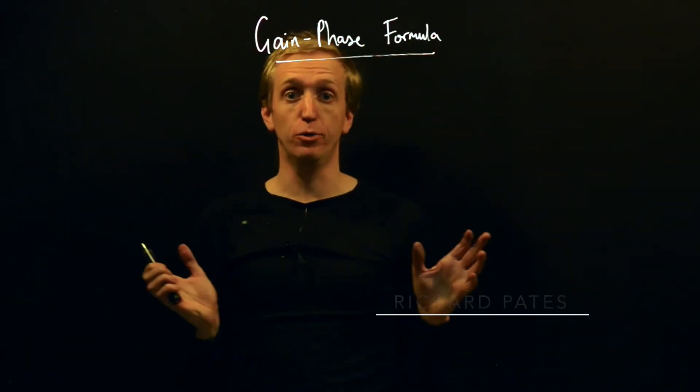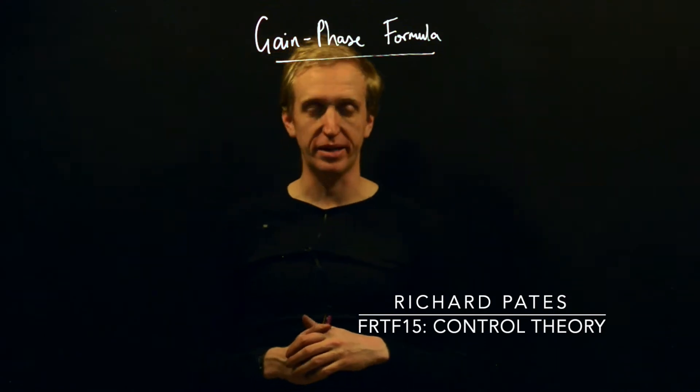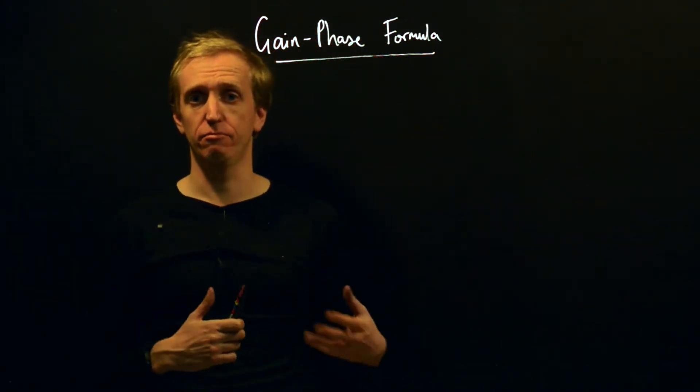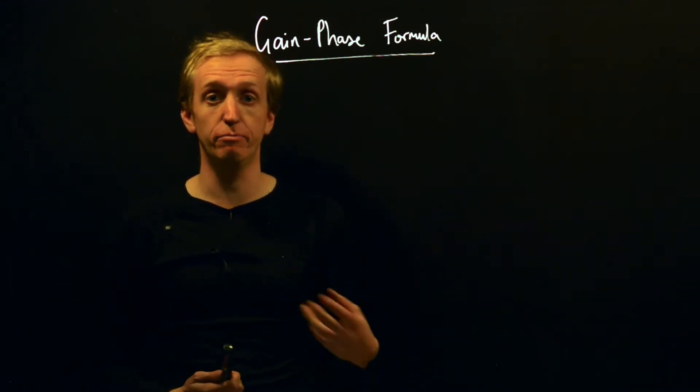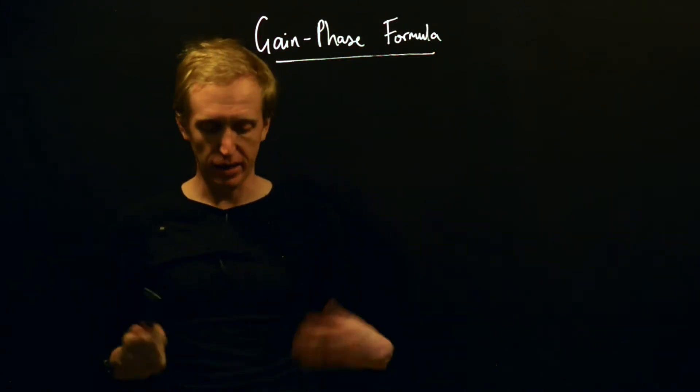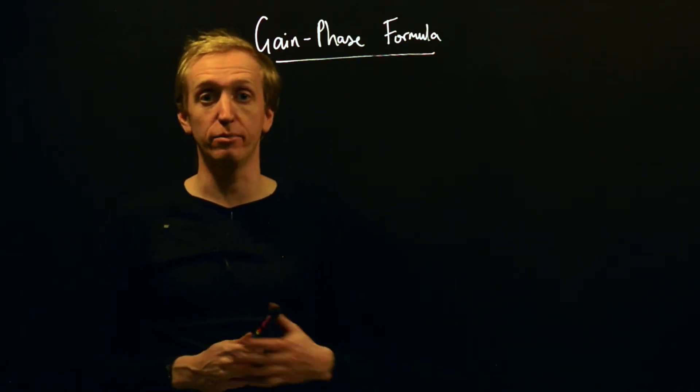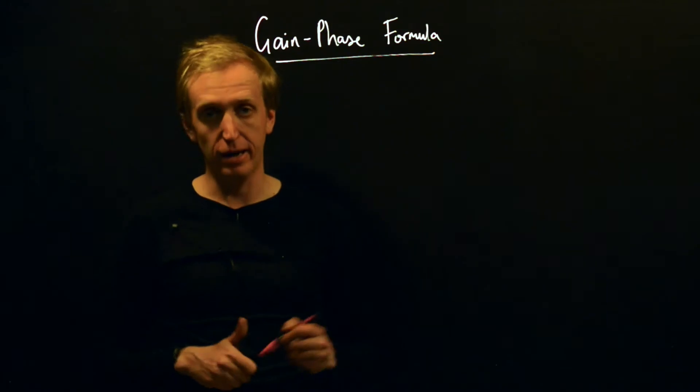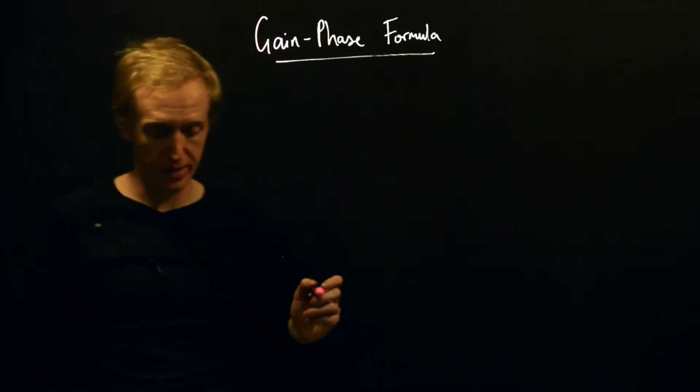We're now going to briefly talk about something called Bode's gain-phase relation, or formula. This is a formula that has something to say about what can be achieved with feedback. It imposes some fundamental limitations on what you can achieve with feedback. We're going to see a lot more about fundamental limitations of feedback in the next lecture, but we'll just introduce this one now to set the scene and give a flavor of things to come.